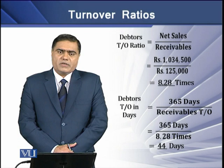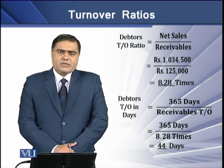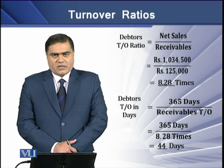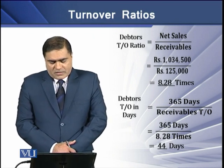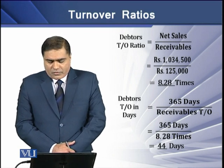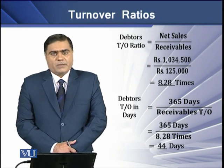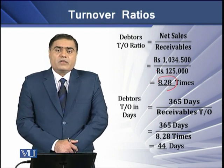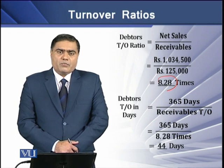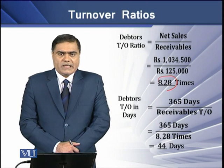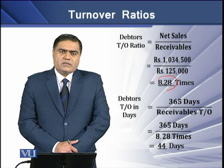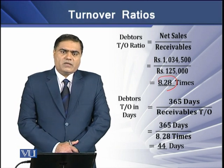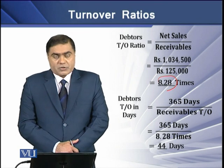Next we have debtors turnover ratio. This ratio tells us how many times a firm has generated sales with reference to its investment in debtors. We have two variables: net sales and receivables. In this example, we have net sales of 1.0345 million and receivables of 0.125 million. Determining the ratio, we get an answer of 8.28 times. This means the firm has generated more than eight times the amount invested in its debtors or receivables. In simple words, every rupee invested in debtors has been converted into sales of Rs. 8.28.